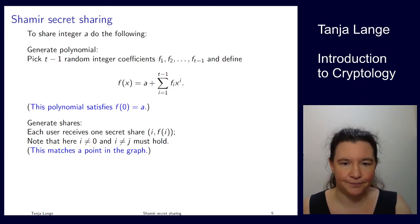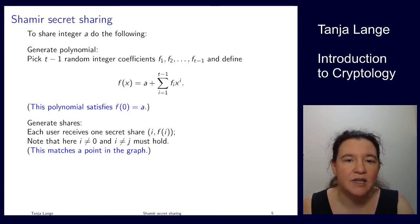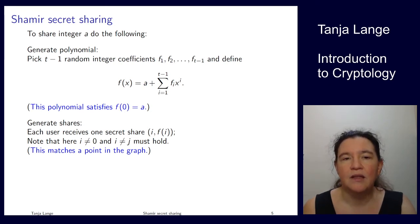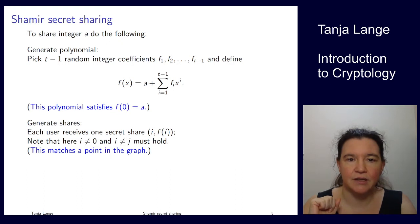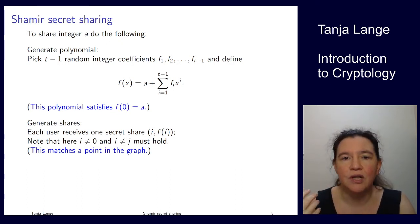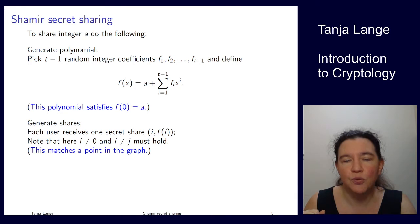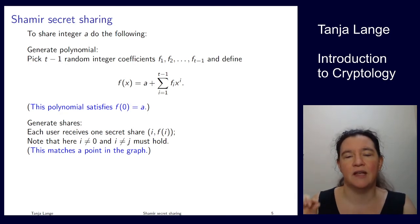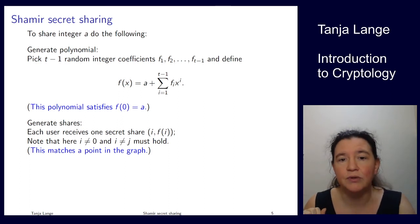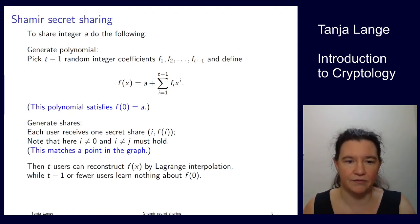We use integers to avoid precision issues. It's important that everybody gets their own unique number — if people got the same i, they couldn't combine their shares. In general, each of the n users gets a unique nonzero i, which can be negative but must be unique to them. Then they receive the pair (i, f(i)) — one dot in the graph.